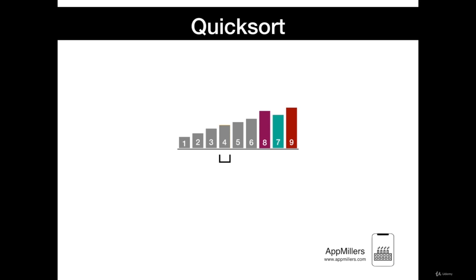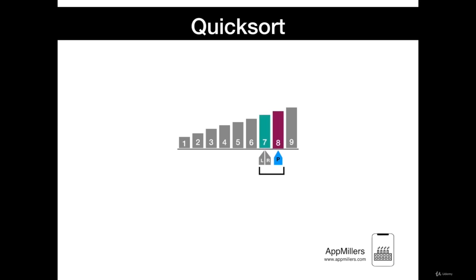In the last round, we continue the same process: selecting Pivot, left and right markers. The left marker moves to the end of the sequence because there is no number larger than 9. The right marker remains in its position because it was passed by the left marker, so 9 is considered fully sorted. We repeat the same operation for 8 and 7 and swap them. Finally, only 8 is left and is considered fully sorted because it is the only number remaining. Our sequence is fully sorted.